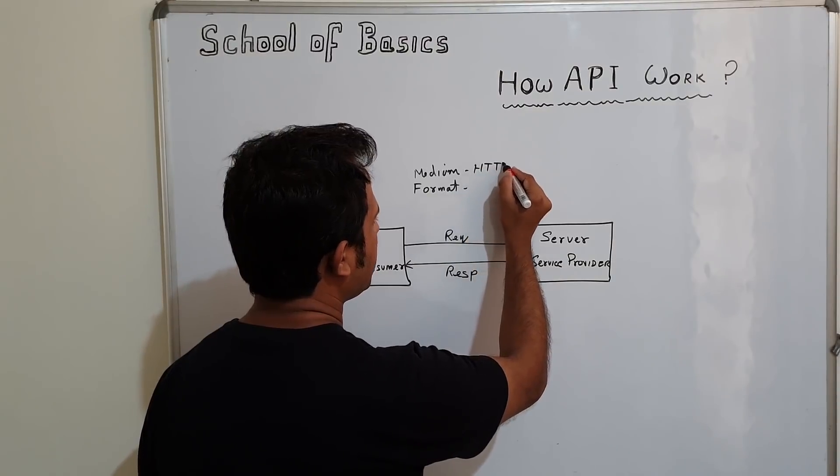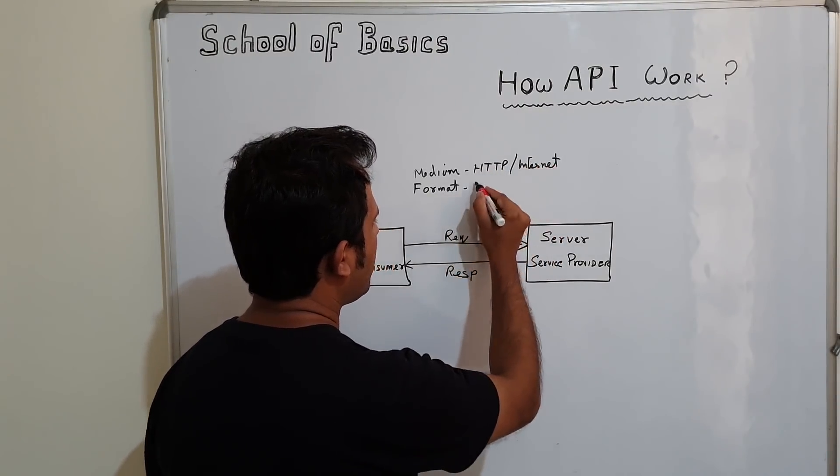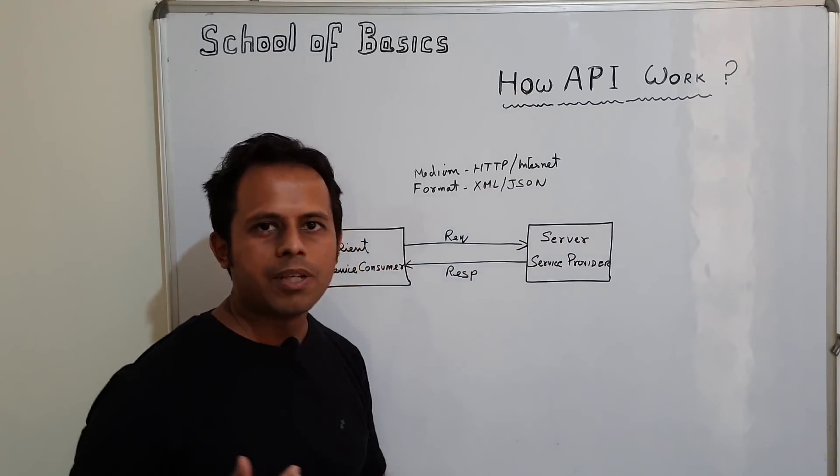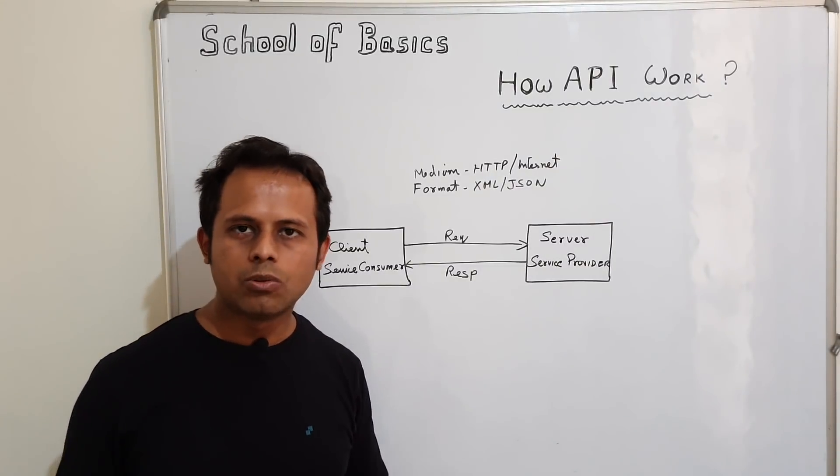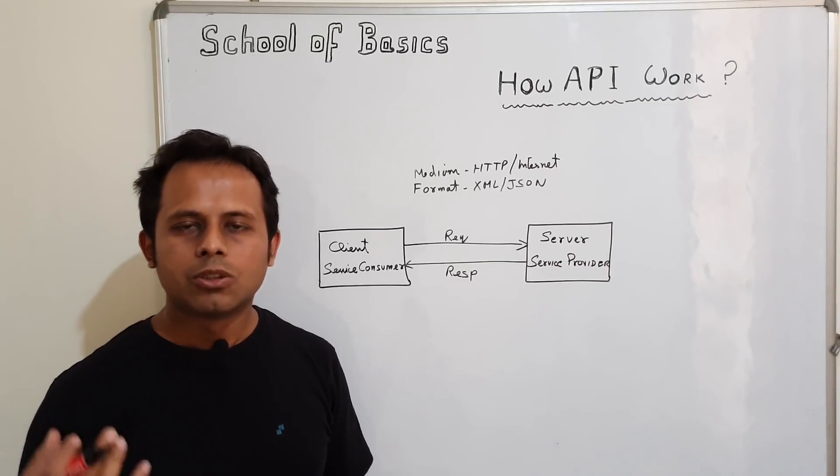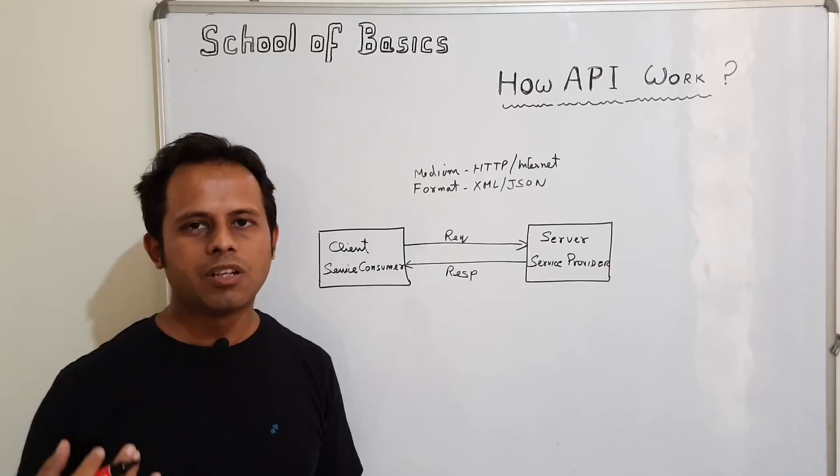So we use the HTTP over internet and then format can be XML. So format can be XML or JSON or any other format that these two components can understand. And then the medium can be HTTP. So similarly for every API, there needs to be a medium and there needs to be a format.